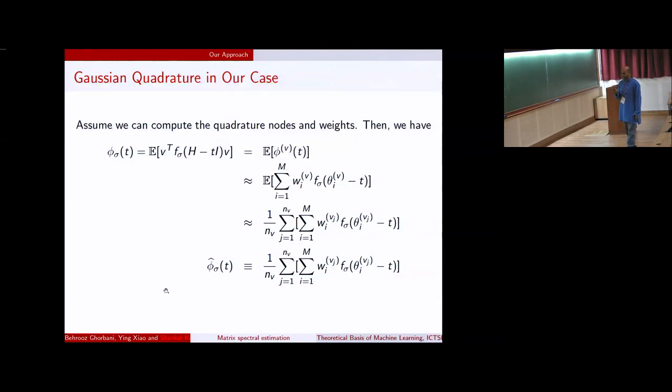Maybe this is too heavy, but essentially what I am saying is the same thing. We had this expectation over phi Vs that we can now write. Now let me tell you that, let us assume we know where the quadrature nodes and weights are. I haven't told you yet how to do that. But suppose you know how to do it. We use this summation now. And this expectation becomes essentially a summation over the number of vectors you hit it with. And that is our approximation. This is how we compute the spectrum.